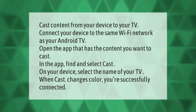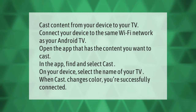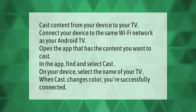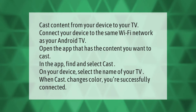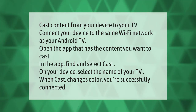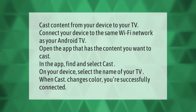To cast content from your device to your TV, connect your device to the same Wi-Fi network as your Android TV. Open the app that has the content you want to cast. In the app, find and select Cast on your device, then select the name of your TV. When Cast changes color, you're successfully connected.